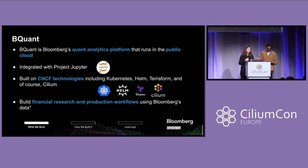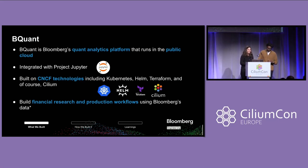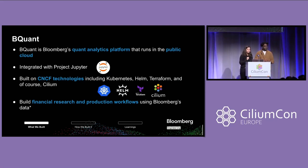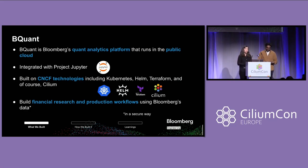So we're from BQuant, which is a group at Bloomberg that builds a quant analytics platform that runs in the public cloud. We use CNCF technologies like Kubernetes, Helm, Terraform, and of course Cilium, which is why we're here today. Our platform enables quant analysts to build financial research and production workflows using Bloomberg data. And we want to be able to have our clients do this in a secure way. So Sretej is going to talk a little bit about how we make this possible.